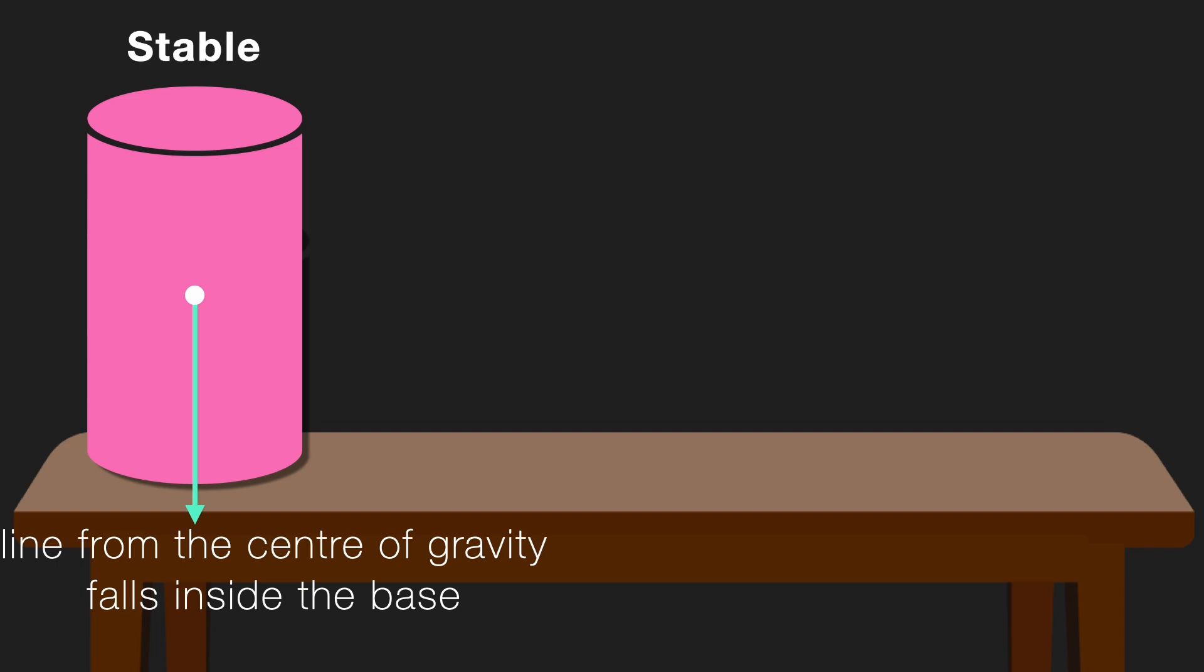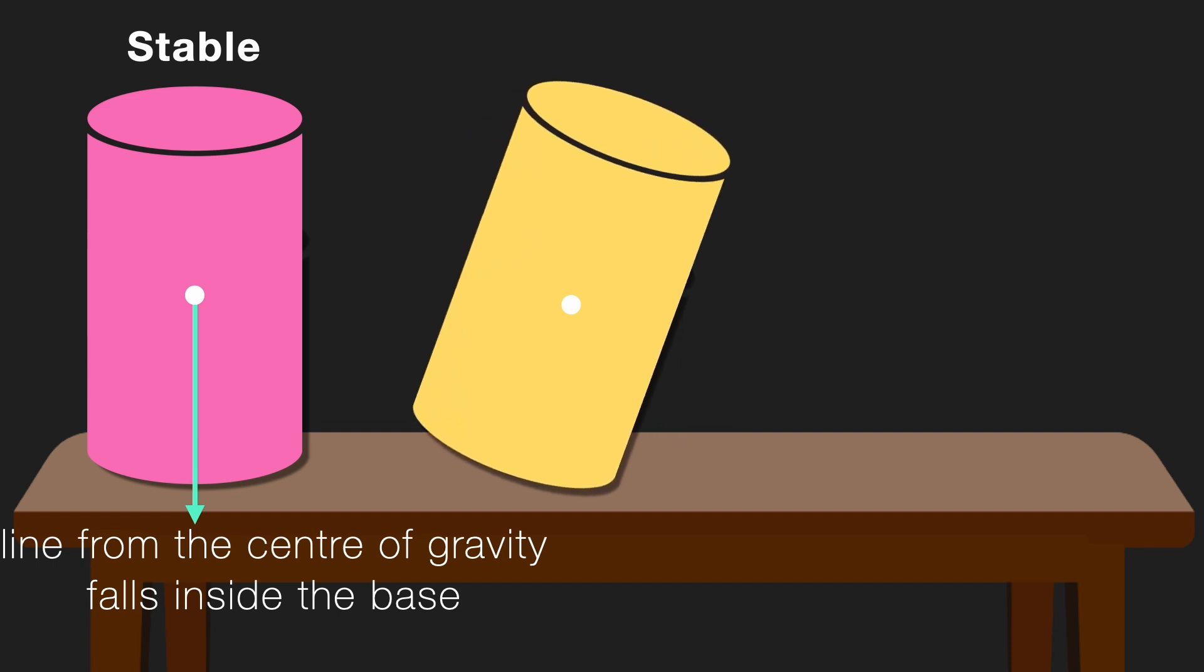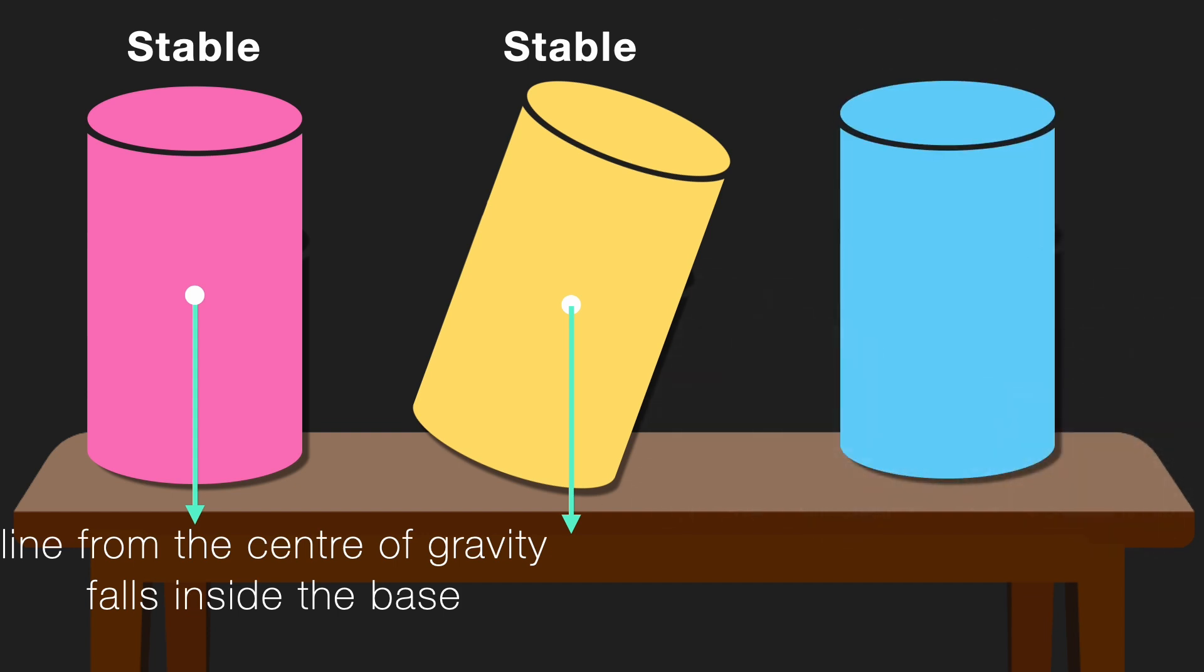Let's bring in another identical cylinder. Now I'm going to tilt it just a bit. If we draw a vertical line from the center of gravity and the line still falls within the base of the object, it is stable.